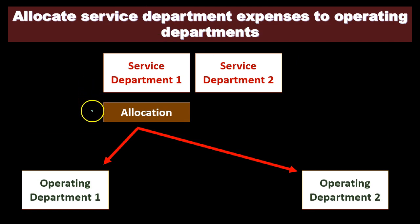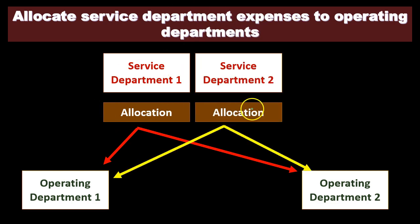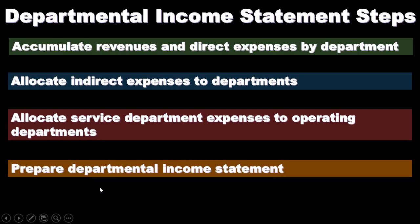So for service department one, we're going to use some type of allocation method because the service department is most likely benefiting both operating departments. We'll use some type of activity base to take the total cost of the service department and allocate it between the operating departments. We'll do the same for service department two — these are benefiting both departments, so we take some activity base and allocate those costs between the operating departments. Once we've completed those steps, we take this information and prepare the departmental income statement.